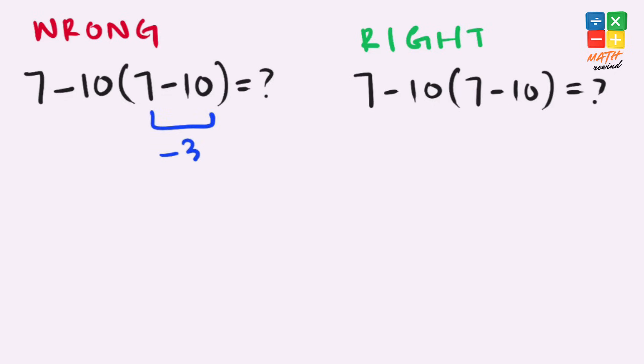7 minus 10 equals minus 3. 7 minus 10 equals minus 3. Negative 3 times negative 3 gives us positive 9.